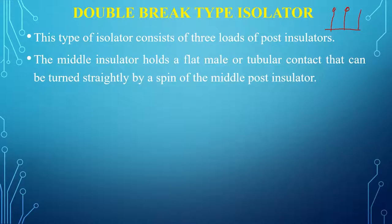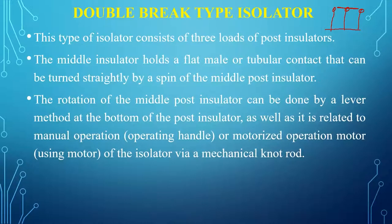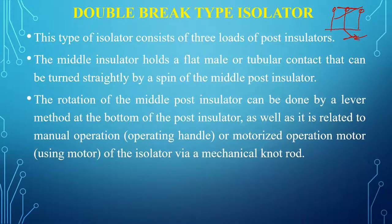The center post insulator holds the tubular contact. There are three post insulators; the center one holds the tube. The rotation of the middle post insulator is done by a lever mechanism. When the lever is pushed one way the isolator opens; when pushed the other way it closes.